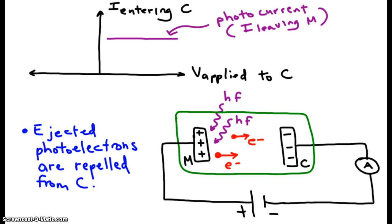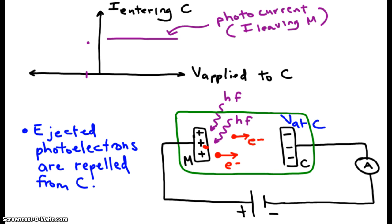What impact does this have on the photocurrent? The answer is that it depends on how large the negative voltage is at C. If the negative voltage at C is not very big — maybe negative 0.5 electron volts — then only some of the electrons that are ejected will actually stop before reaching C. With a small negative voltage, the slowest electrons are repelled and turn around before entering C. Because fewer electrons enter C, the current at C is a little bit lower than the true photocurrent emitted from M.